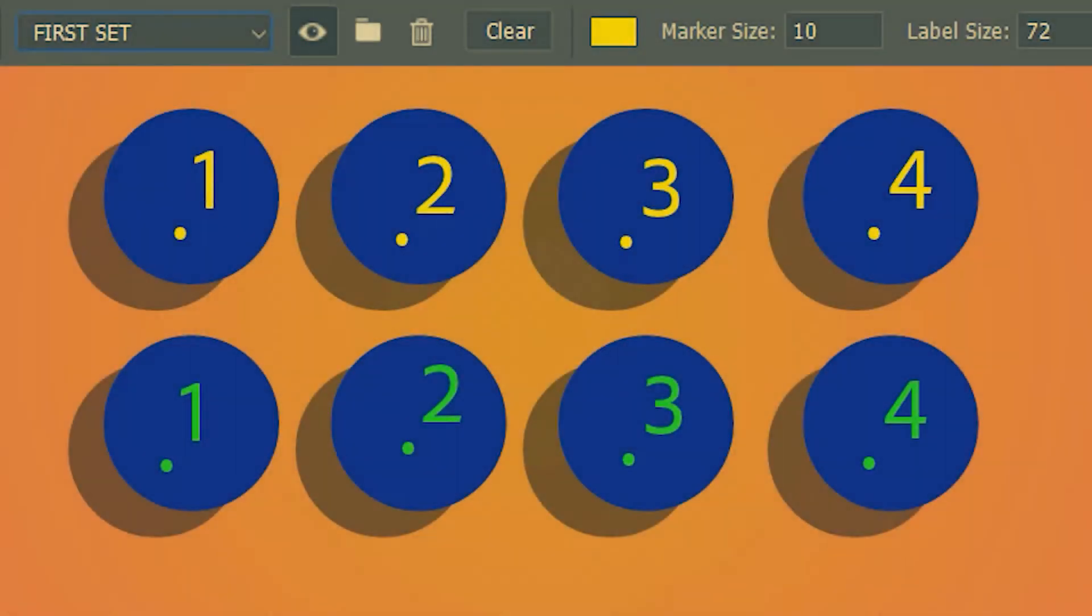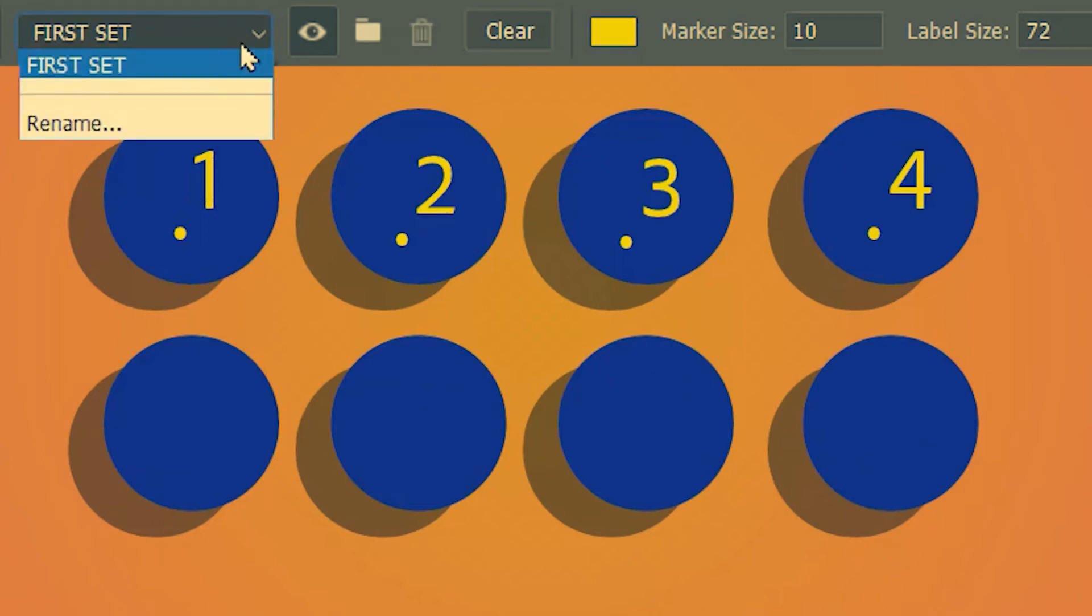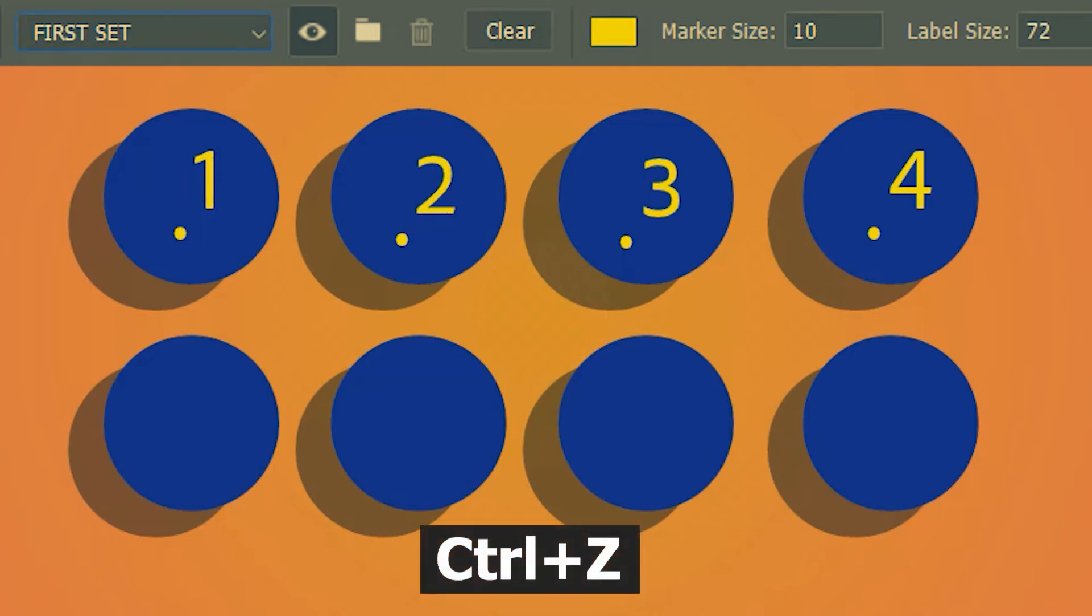Alternatively you can also delete the entire set. Suppose I want to delete the second set. So I'm going to go ahead and select the second set and hit the trash icon over here. So you're not going to see the second set over here anymore. I'm just going to quickly undo that.